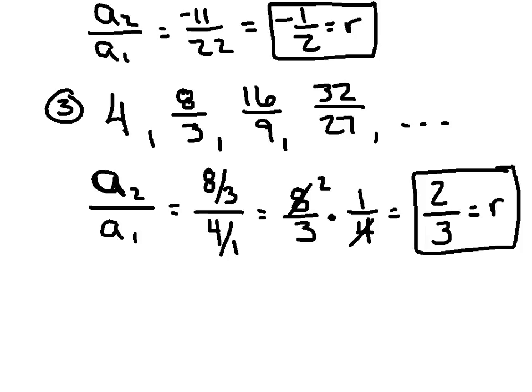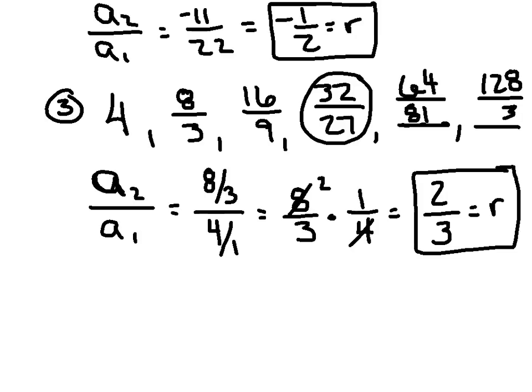You could use that R value to produce the next couple of terms. If I multiplied this term by 2 thirds, I'd get 64 over 81. If I multiplied by 2 thirds again, I'd get 128 over 243, and you can continue to perpetuate that pattern beyond those terms.